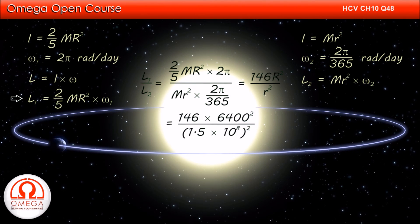Putting the values, we get 146 × 6400² divided by (1.5 × 10⁸)². Simplifying, we get 2.66 × 10⁻⁷. This is our answer.